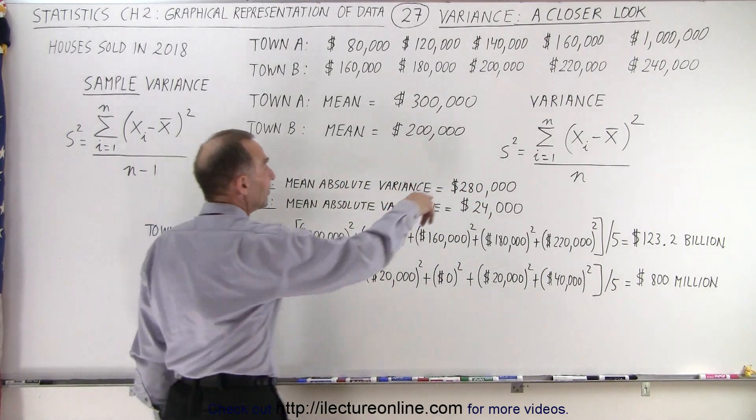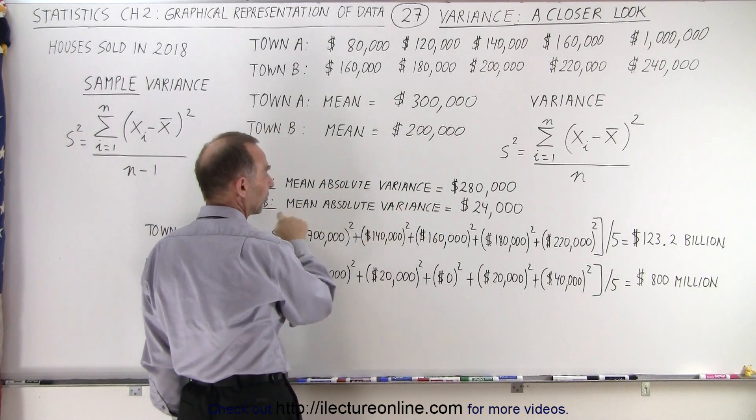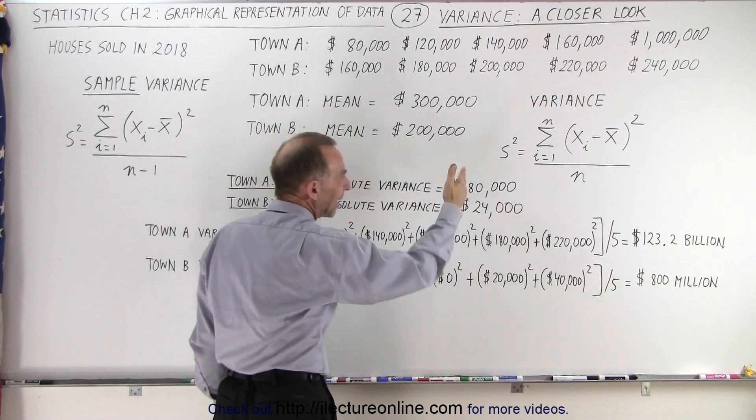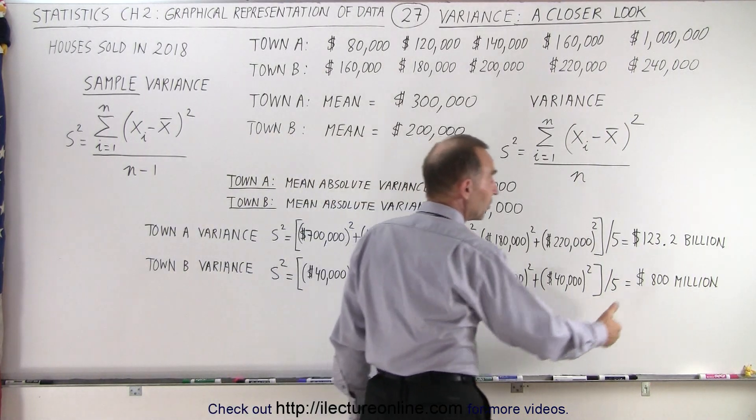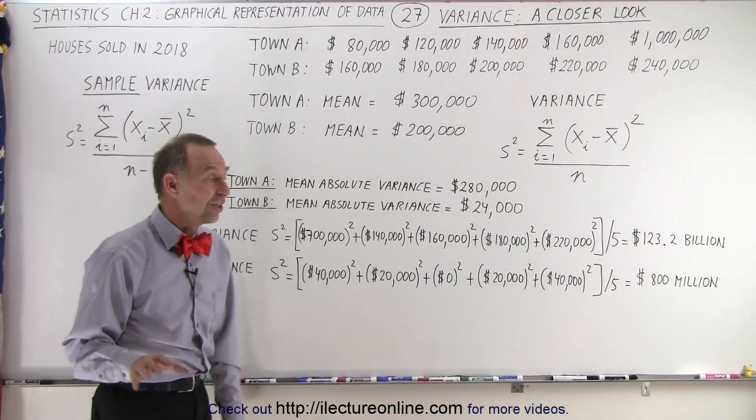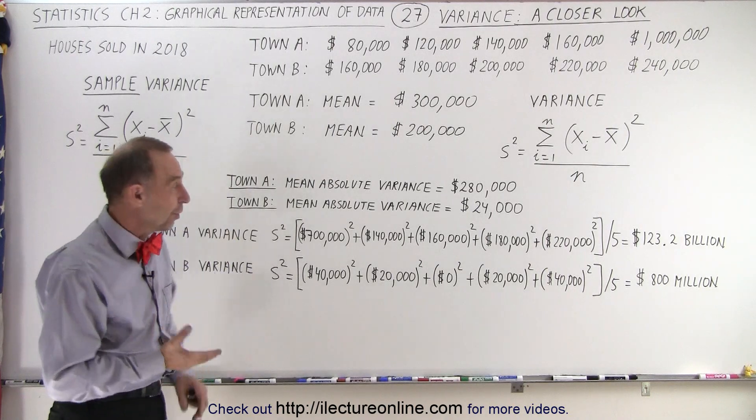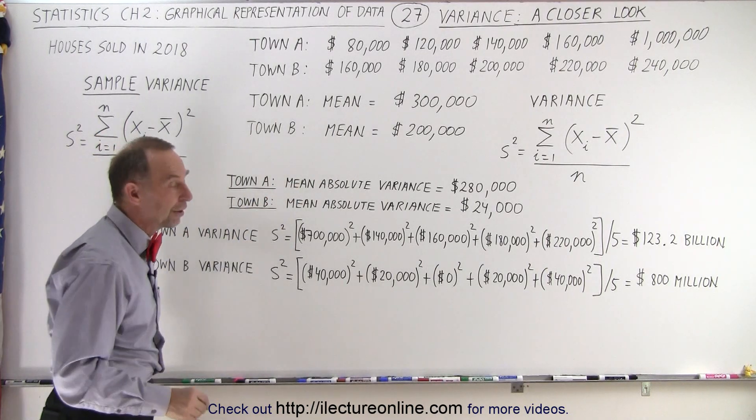Notice that the difference between the mean absolute variance for town A and the mean absolute variance for town B is about a factor of ten to one. But when we square the values, now the difference is more than a hundred to one. So you can see that you get a much bigger difference when you calculate the variance rather than the mean absolute variance.